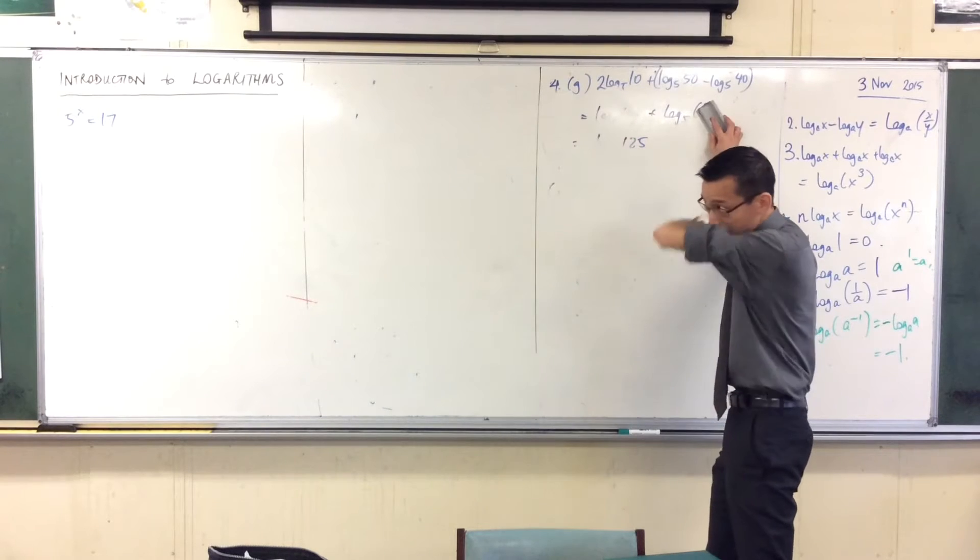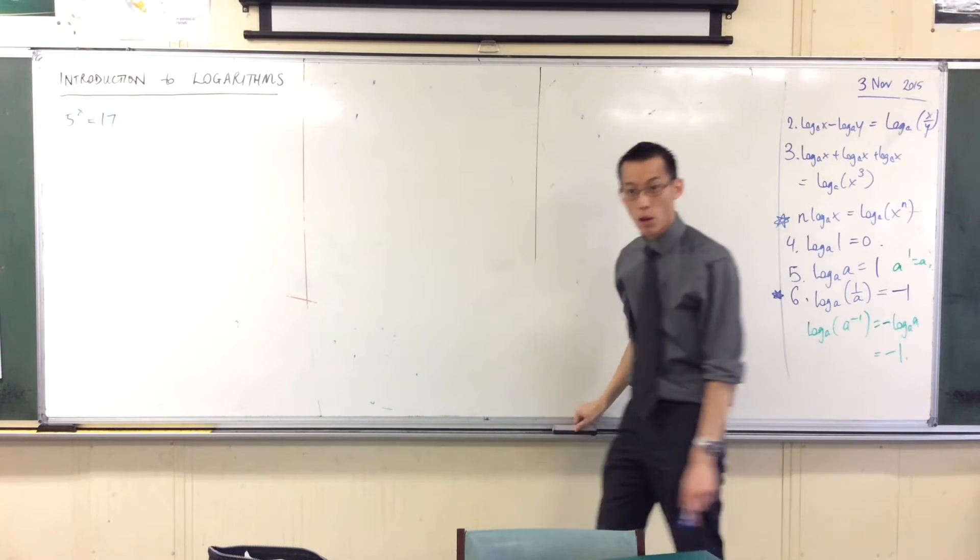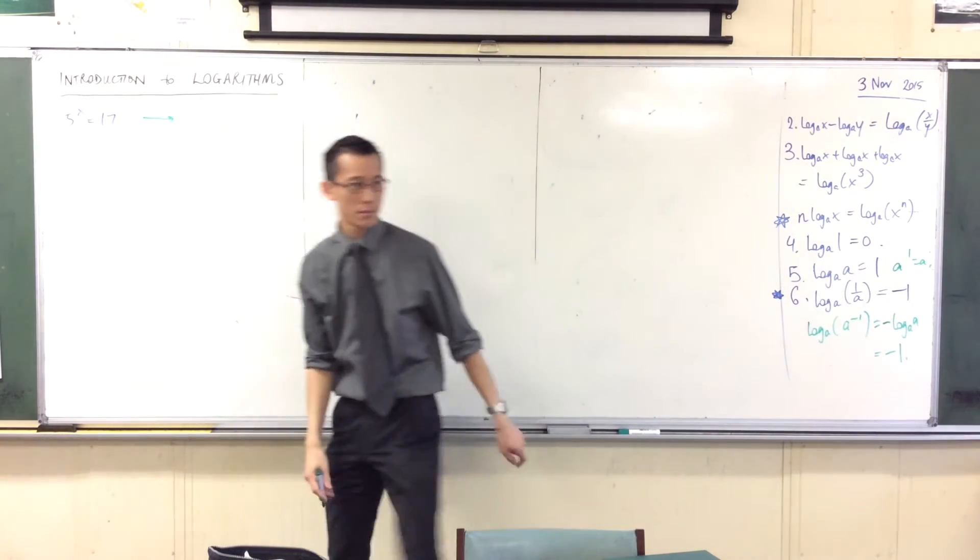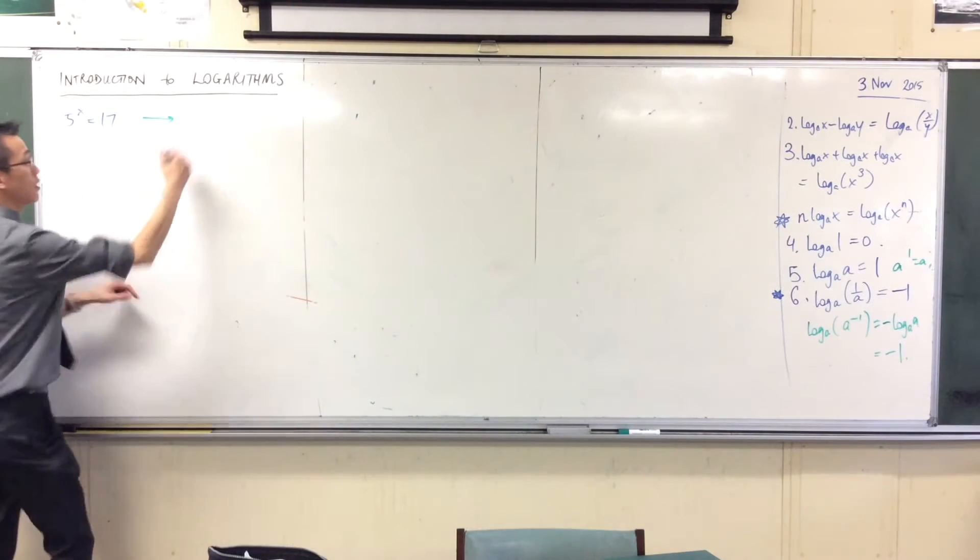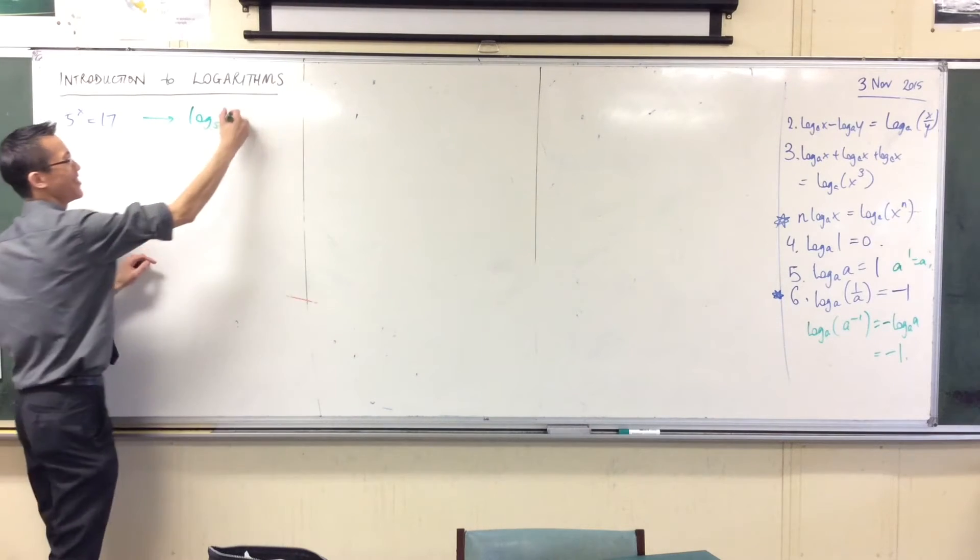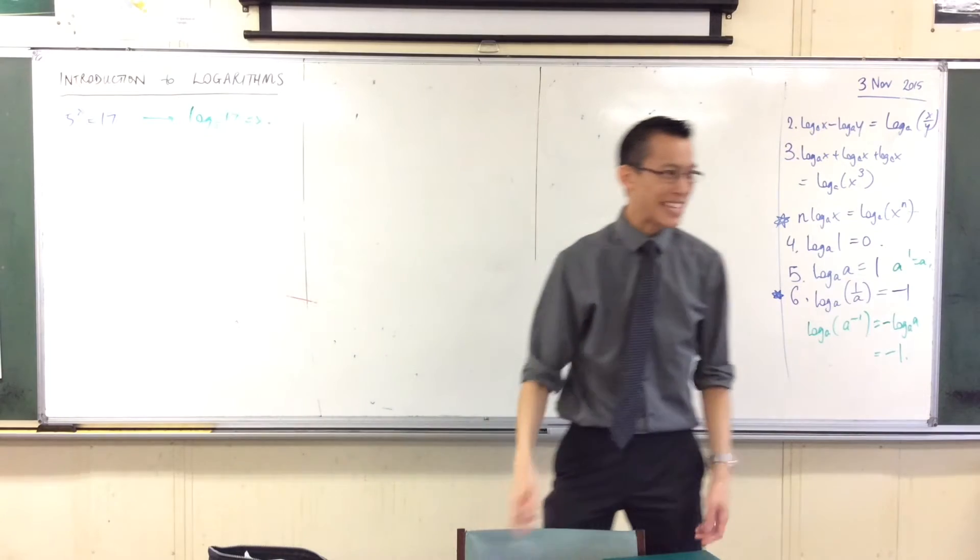First thing I'm going to suggest is, I would usually rewrite this in log form. Now, don't write this down. How would I rewrite this in log form? This is an index equation. Log base 5, it's x. Now, 17. Yes, 17, good? Equals x. Now, that's what I want. But that's a dead end.